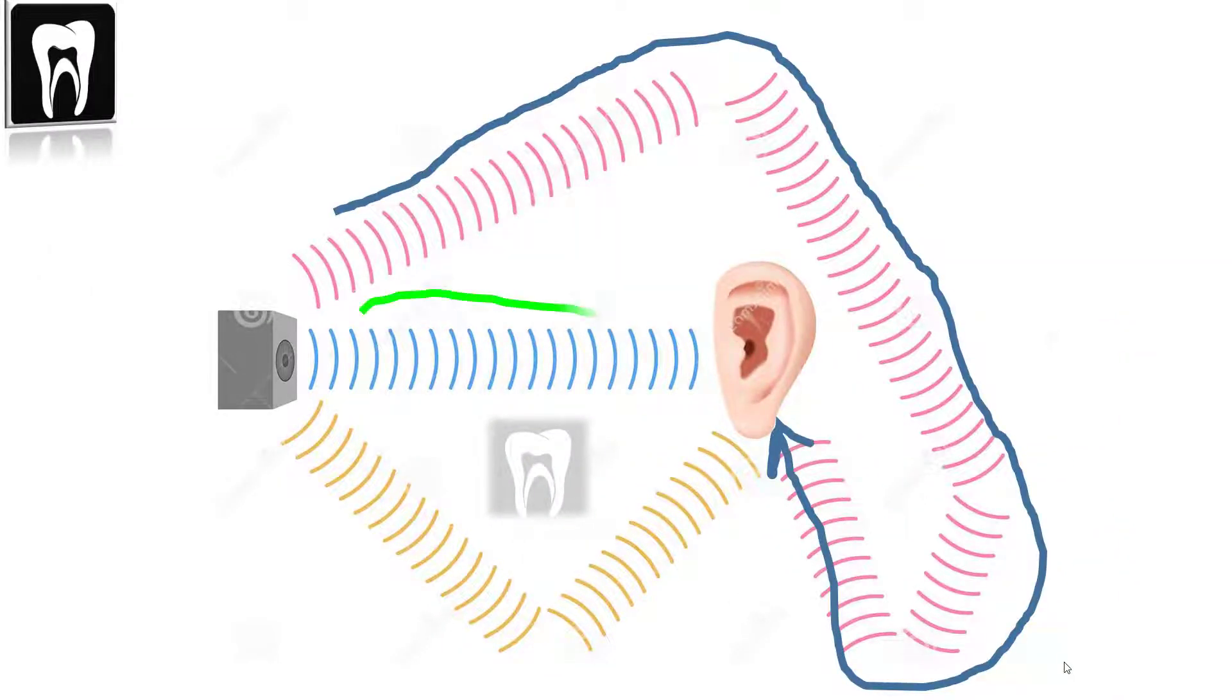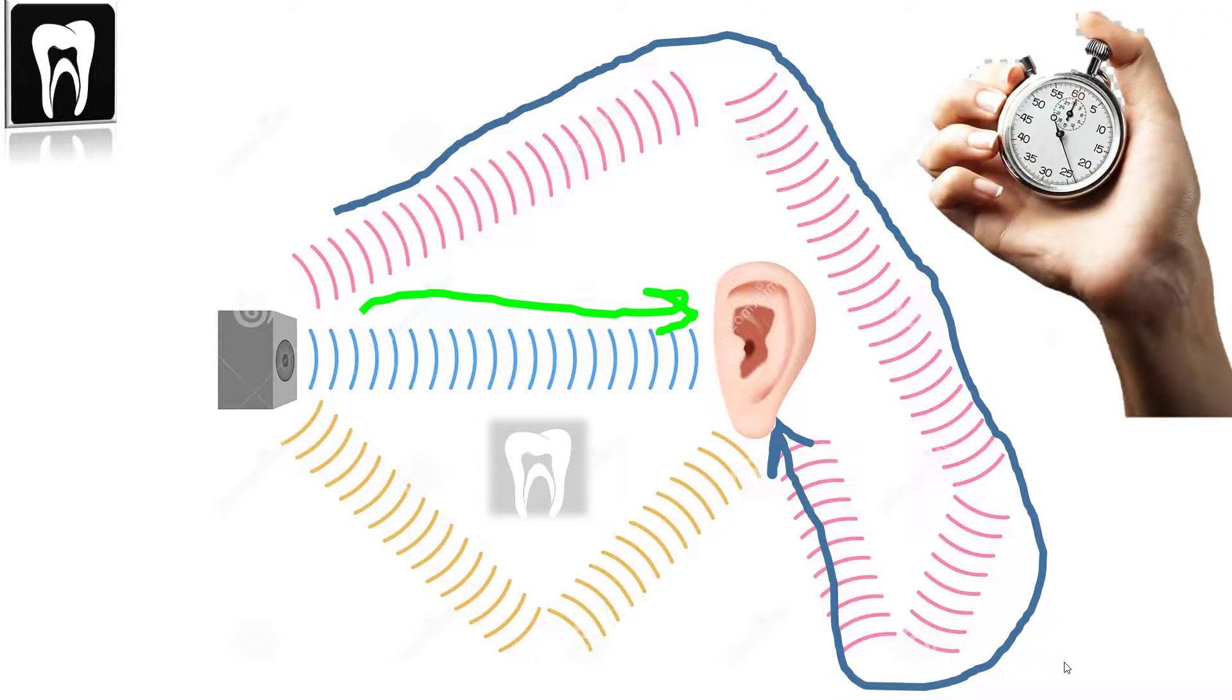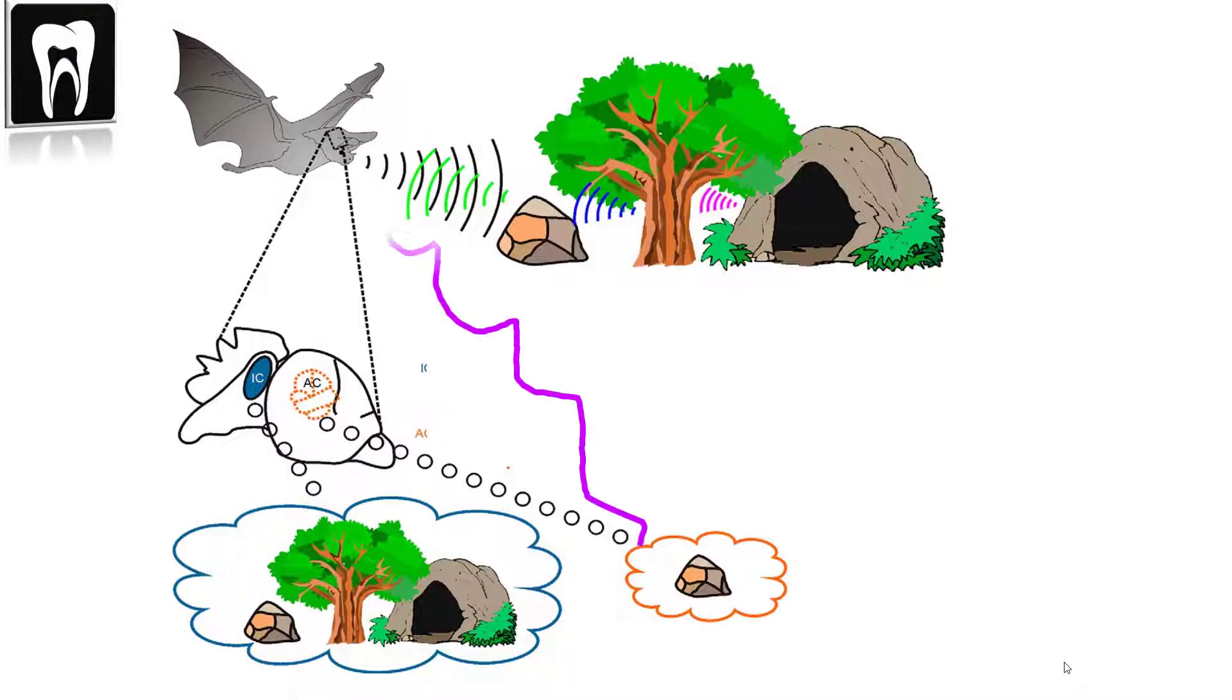The time taken for the sound wave to reach the object and return back to the bat's ears tells it how far it is. The longer the sound waves take to return, the further away the object is. The sound that comes back is an echo that carries a lot of information and creates a map of the environment around.